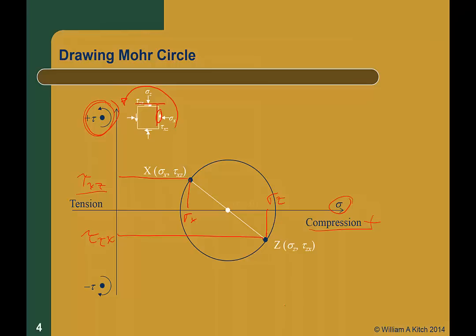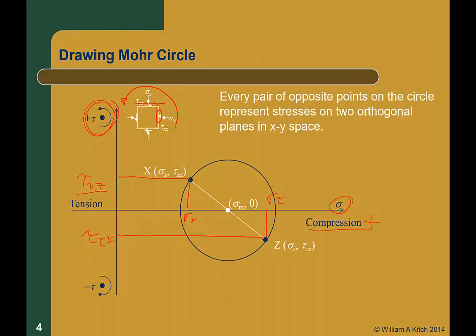The center of the Mohr's circle represents the mean normal stress. Using Pythagoras' theorem, we can compute the diameter of the circle as the square root of (sigma z minus sigma x) squared plus (twice tau zx) squared. This represents twice the maximum shear stress at the surface of point A. Every pair of points opposite each other on the circle represents two orthogonal planes in xz space, so all pairs of points represent stresses on planes at point A with different orientations. The coordinates of those pairs represent normal and shear stresses on those planes.